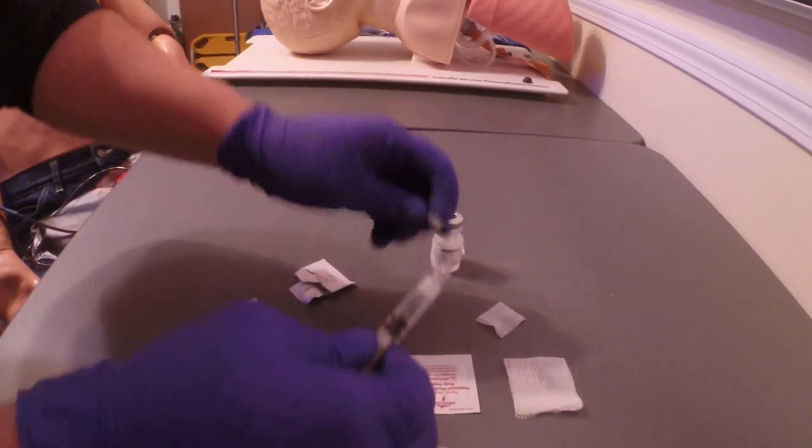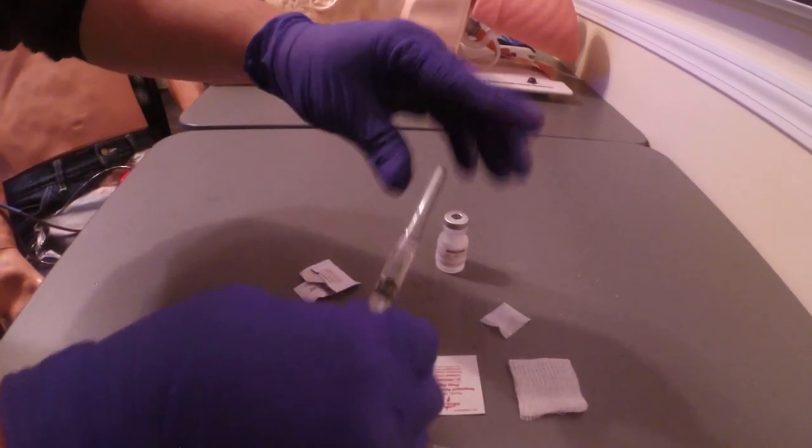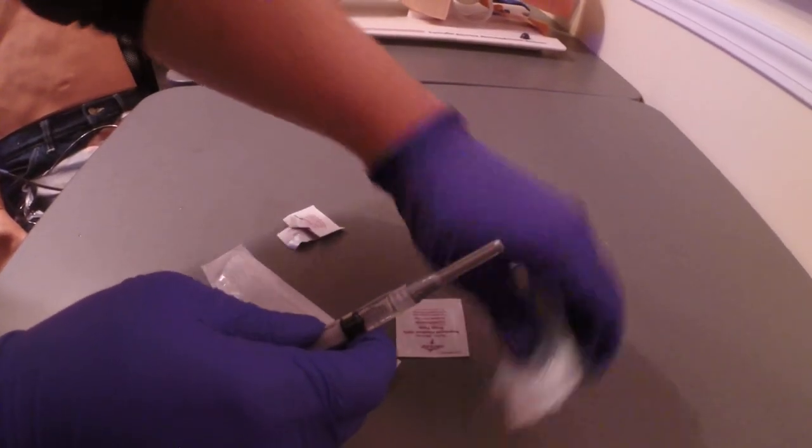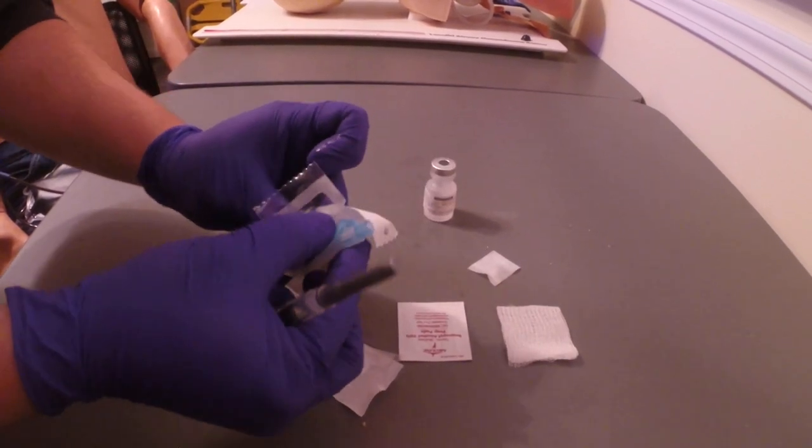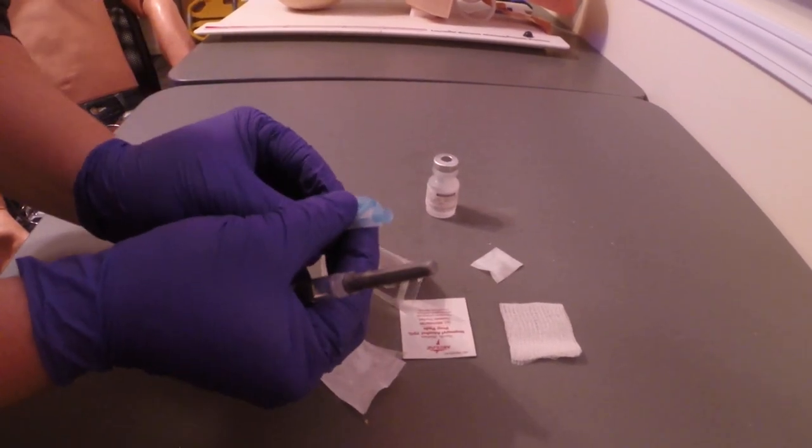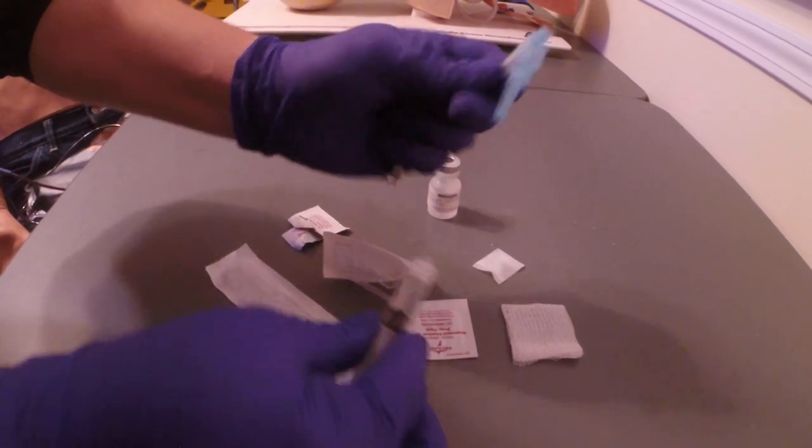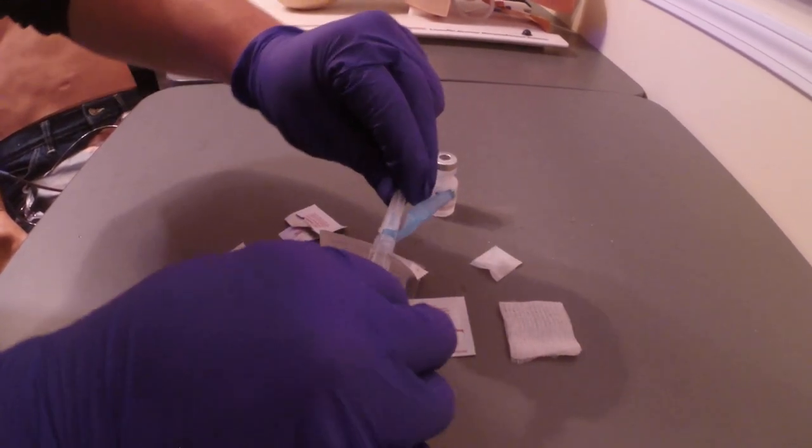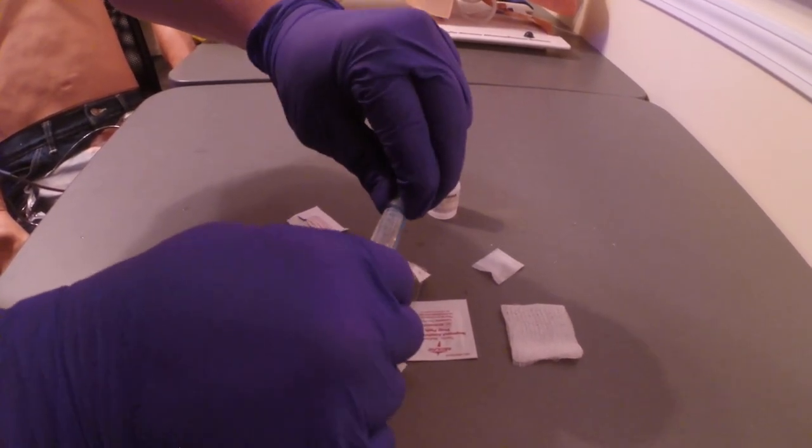Remove the vial, recap your blunt cannula, open up your needle, remove your blunt tip and attach your needle.